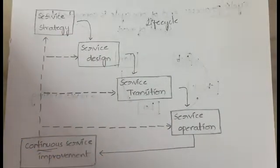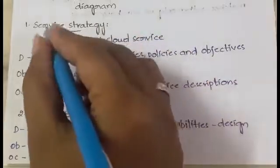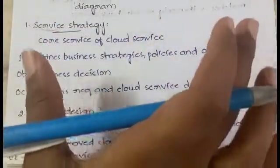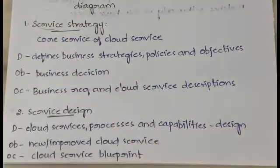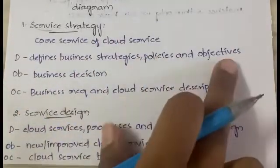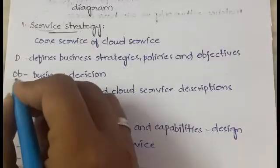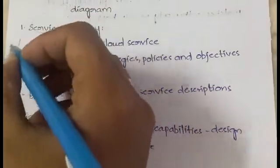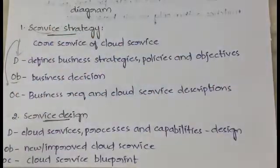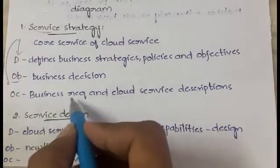Now I'll explain each phase in detail — the description, objective, and outcome. The first phase is service strategy, which is the core of all cloud services. This is where the service takes birth. The description of service strategy is that it defines business strategies, policies, and objectives. The objective is to determine business decisions. The outcome of the service strategy phase is business requirements and cloud service descriptions.